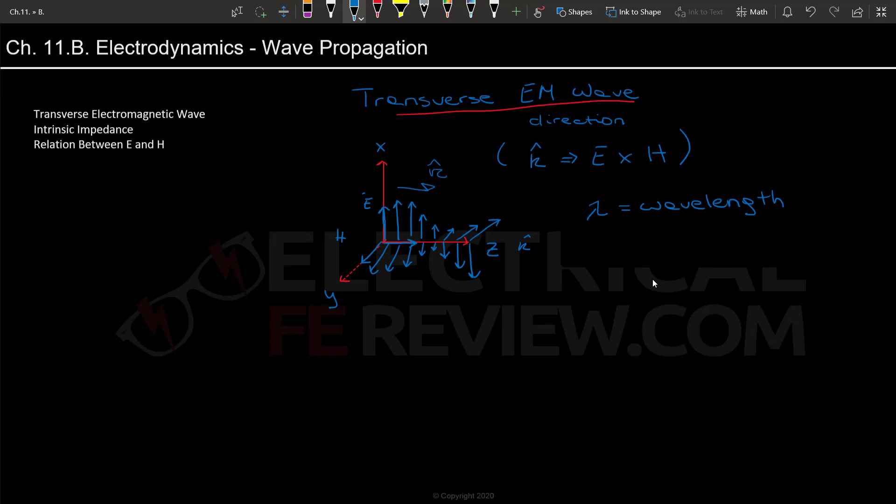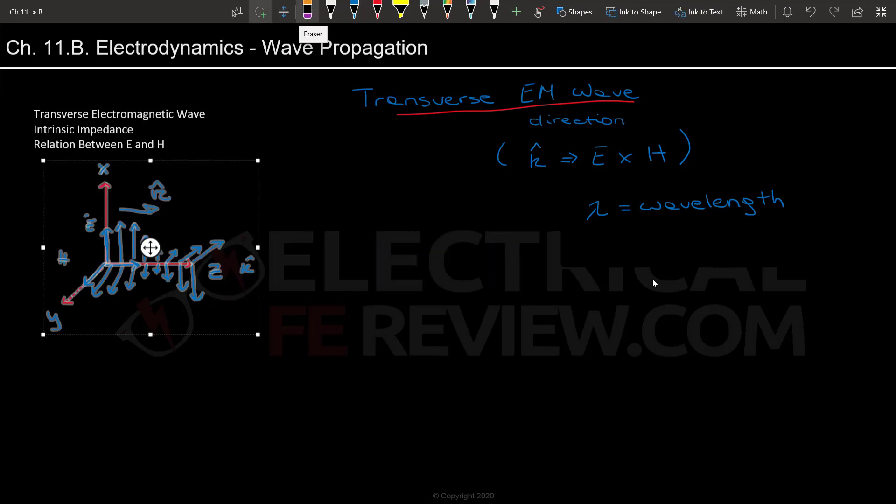An example of these kind of waves are waves that travel through transmission lines. So it's definitely something very useful and a great application of electromagnetics. I'll save the drawing for reference. And now let's go over intrinsic impedance.